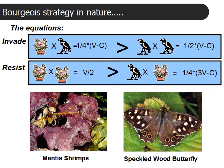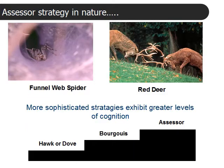The assessor strategy, if we look at the algebra of the payoffs, has the same good characteristics as the bourgeois strategy — it's very good at invading a population of other strategies, and it's also very good at defending itself from invasion when it becomes prevalent in the population. As a matter of fact, assessor is the best of the strategies that have been found for Hawk-Dove.